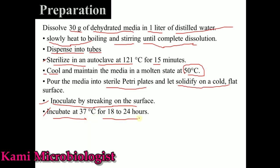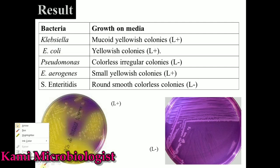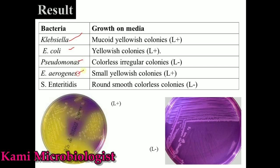Now let's talk about the results — what type of bacteria we get on this media. We mostly get Enterobacteriaceae on this media, including Klebsiella, E. coli, Pseudomonas, Enterobacter, and Salmonella. Gram-positive bacteria do not grow on this media due to the presence of dyes. Klebsiella mostly produces mucoid yellowish colonies, meaning it is lactose-fermenting.